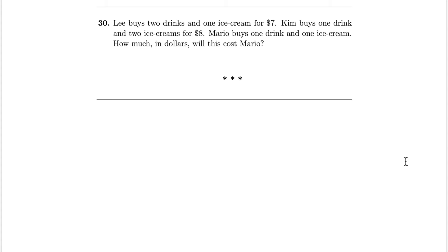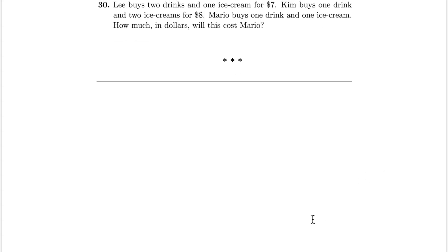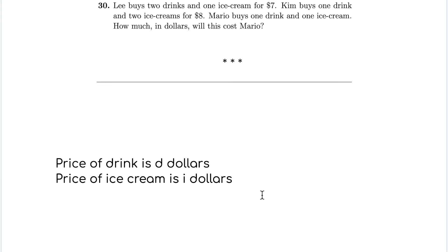So here is the last problem, problem 30. Lee buys two drinks and one ice cream for $7. Kim buys one drink and two ice creams for $8. Mario buys one drink and one ice cream. How much in dollars will this cost Mario? So what we need to do in this problem is we need to use variables. Here we need to do variables for the price of a drink and the price of an ice cream. So let's say the price of a drink is going to be D dollars. And then the price of an ice cream is going to be I dollars. The D and the I just helps us know which one is which. So now Lee buys two drinks and one ice cream, that's $7. So that means 2D plus I is $7.